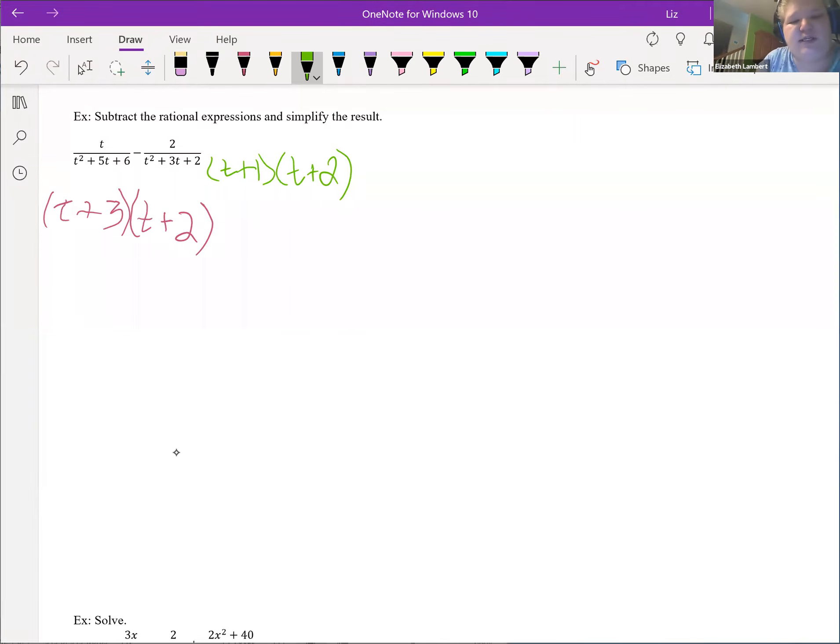So my red denominator and my green denominator here, they both have a t plus 2 already. So I don't need to multiply by that. I just need to give them what they're missing. So my red one is going to need a t plus 1. My green one will need a t plus 3. So I'm going to write it down here in black. I have t, t plus 3, t plus 2, minus 2, and that minus sign can be tricky. So always pay attention on these subtraction ones. T plus 1, t plus 2.